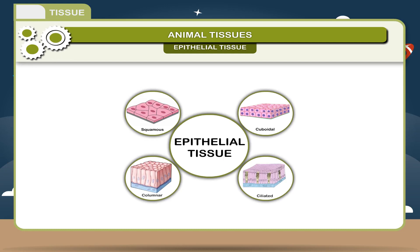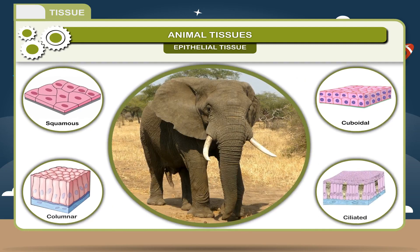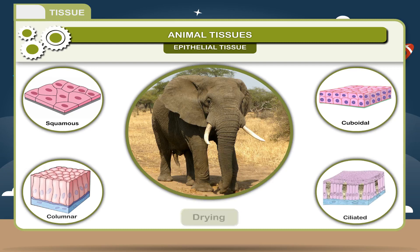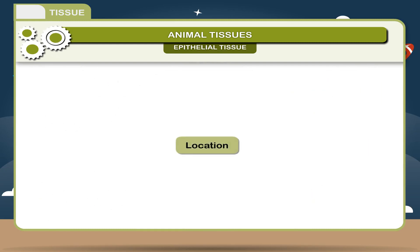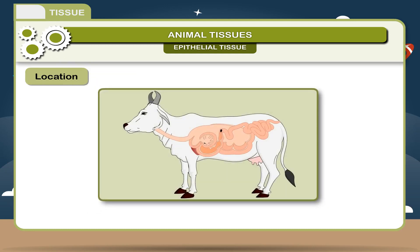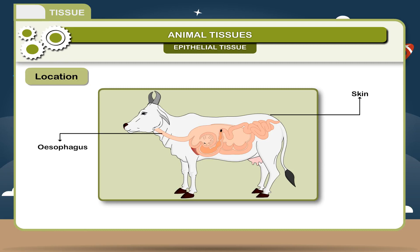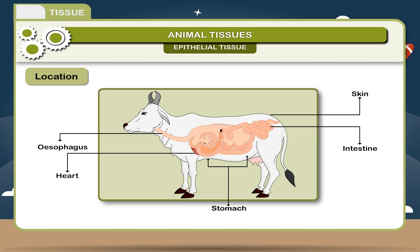The uppermost layer of the skin, which you see, is built of epithelial tissue. It covers the entire body of the animal and covers the internal organs. This tissue protects the underlying cells from drying, injury, and infection. They are present on the outer surface of the skin and line the internal organs like the esophagus, stomach, intestine, heart, etc.